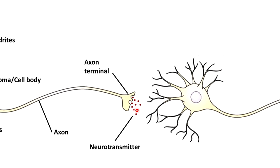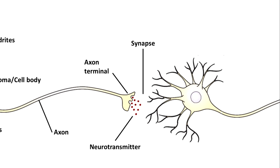When neurotransmitters are released by a certain neuron, they are released into a particular gap or cleft present between the next neuron. In between these two neurons there is a narrow space or gap. This is called the synapse, or more often it is called the synaptic cleft. Within this synaptic cleft the neurotransmitter is released.